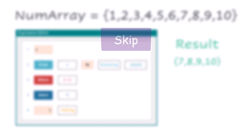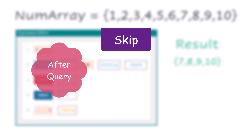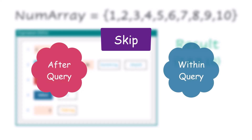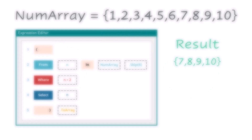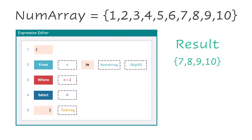These are the 2 ways to use the Skip function in a LINQ query. In summary, we can use Skip function to ignore a specified number of elements: either after the query to filter the output, or within the query to filter the content. That's all about Skip function conceptually. Now I will switch to UiPath to show you different examples.